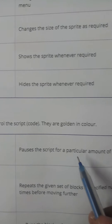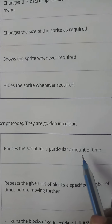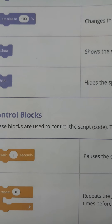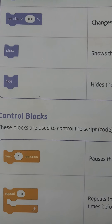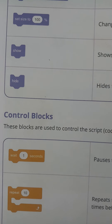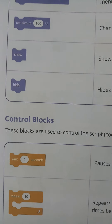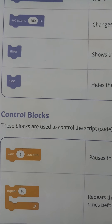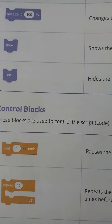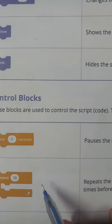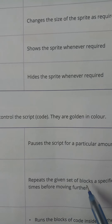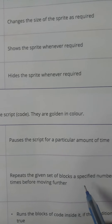The first control block is 'Wait 1 Second,' which is used to pause the script for a particular amount of time — that is, to pause the script for a certain amount of time.